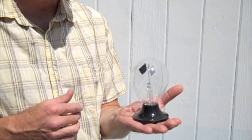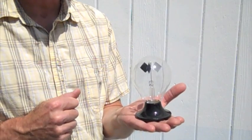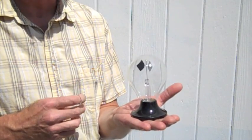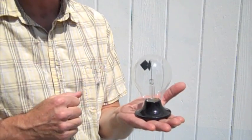Here we are outside in the bright sun. The radiometer is powered by the sun or even the light of a bright lamp. And as you can see, it's spinning away.